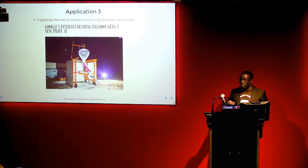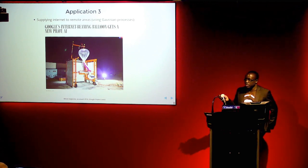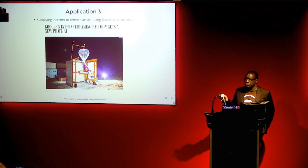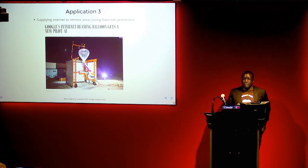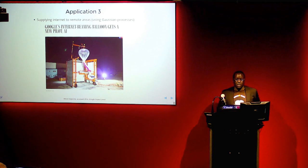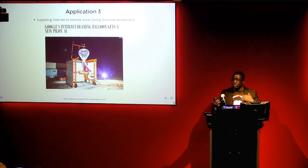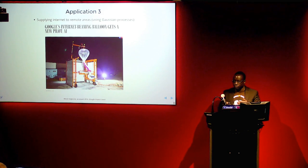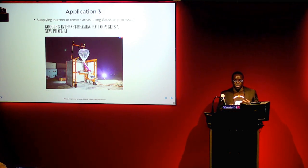The third application is Google Project Loon. They're using balloons to supply internet to remote areas, and the tool they use is called the Gaussian Process — which we'll talk about later. The idea was to have a small number of balloons fly over remote areas, supply internet for longer periods of time, and keep those balloons in the atmosphere for a very long time.